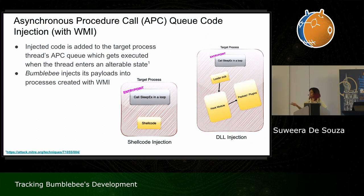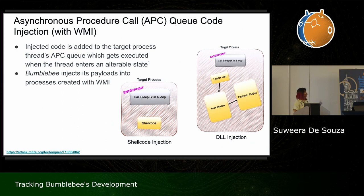On top of that, Bumblebee doesn't inject payloads into just any process — it injects into processes created with WMI. As we know, that creates parent PID spoofing. So we have two stealth techniques combined in one.